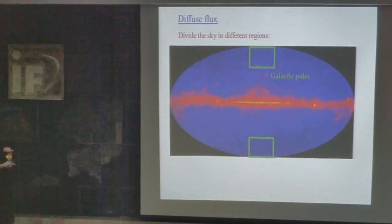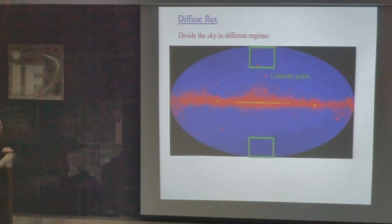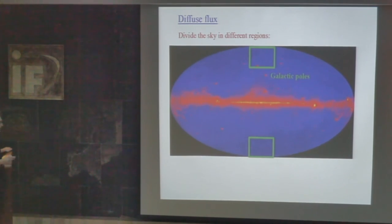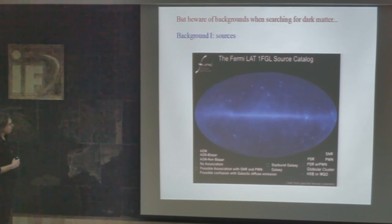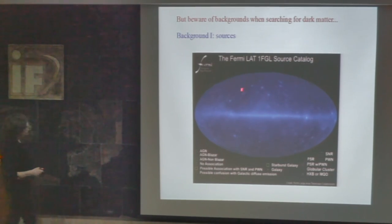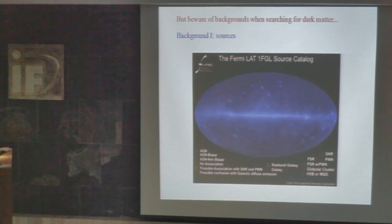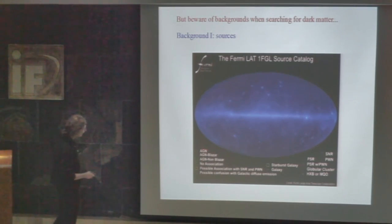This is not a background-free search — there is huge contamination from astrophysical processes and sources. For gamma rays there are two classes of backgrounds. The first are the sources: the Fermi-LAT first source catalog includes active galactic nuclei, pulsars, etc. These objects emit gamma rays, and you don't want to confuse them with gamma ray emission from a dwarf galaxy, so you have to subtract all these point sources.